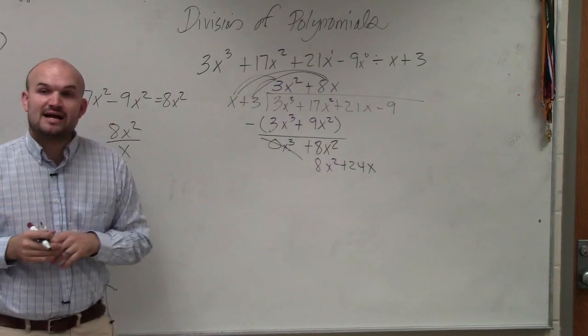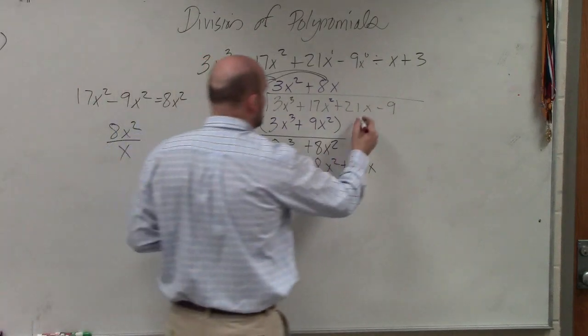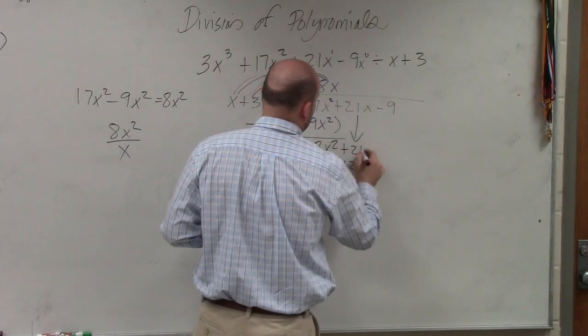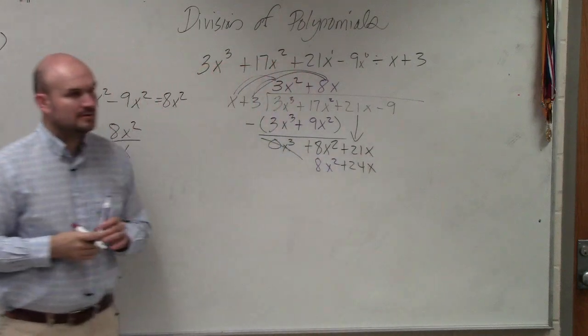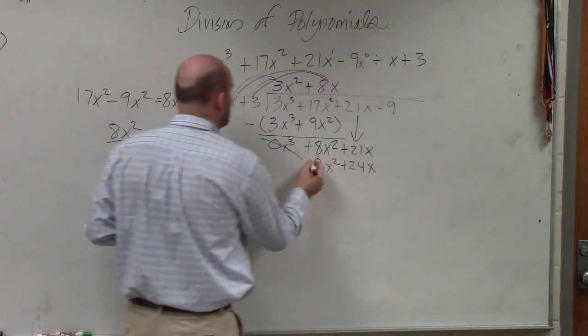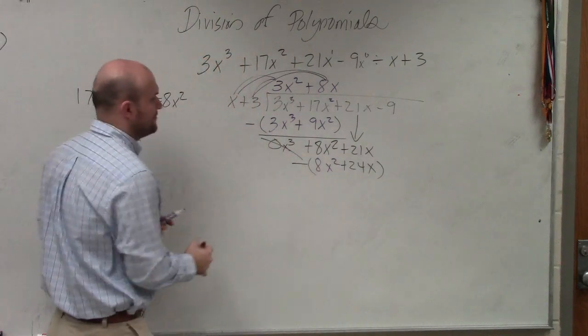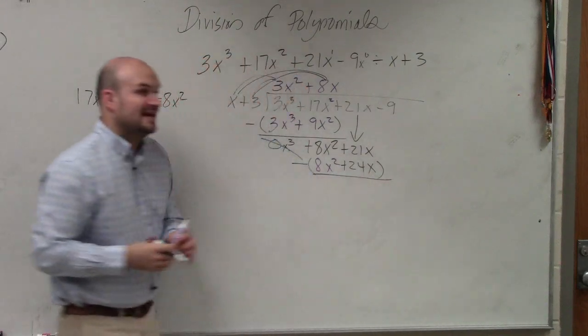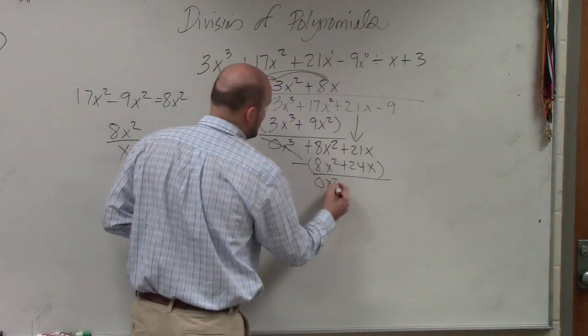Now I don't have anything to subtract the 24x from, so I bring down the next term, which is a positive 21x. Only bring them down when needed is my preference. Now I put them in parentheses and subtract.